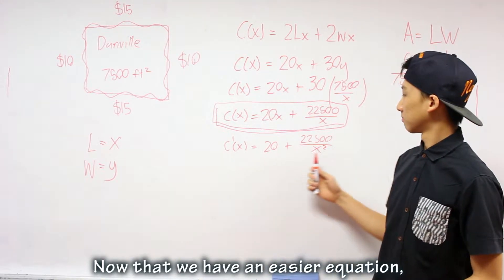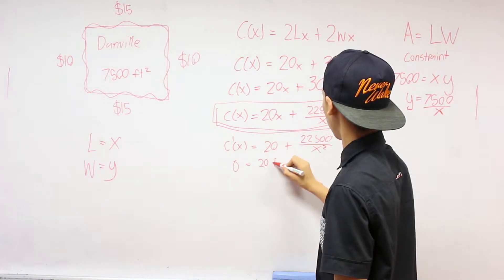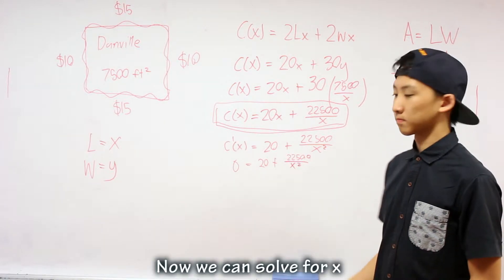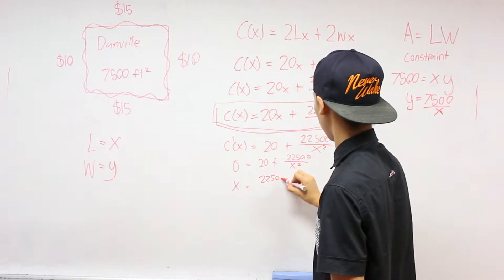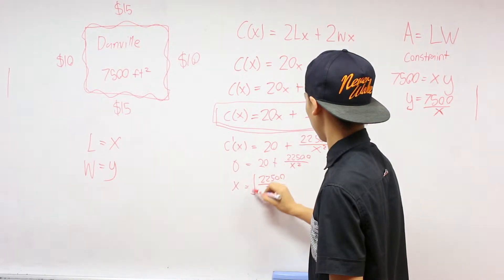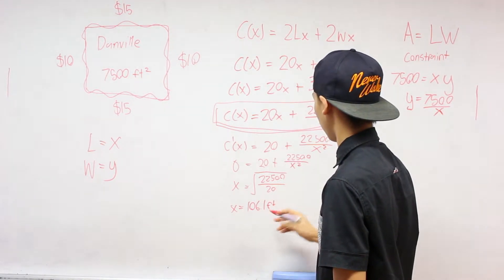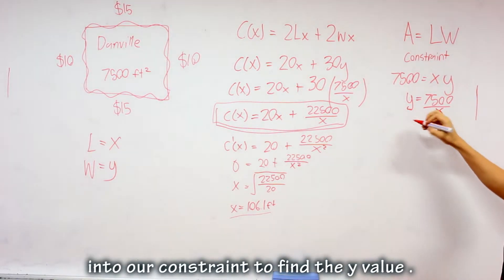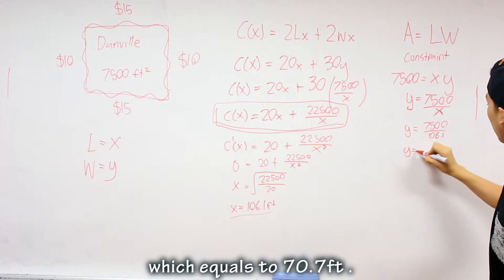Now that we have an easier equation, we can find the minimum dimensions by making the equation equal to zero. Now we can solve for X and X equals to 106.1 feet. We can now sub our X value into our constraint to find the Y value, which equals to 70.7 feet.